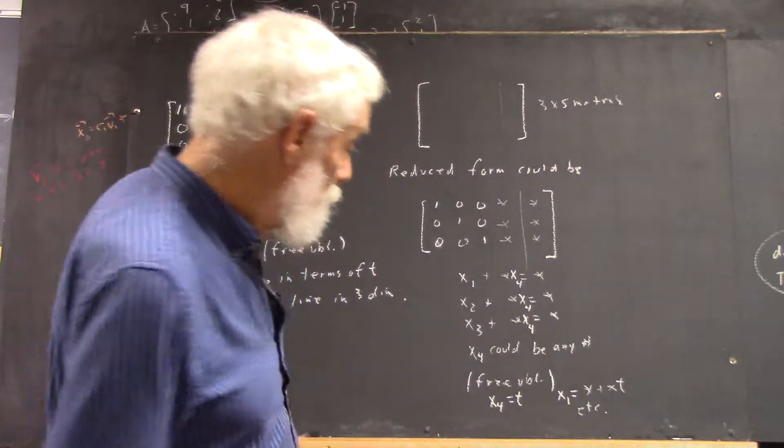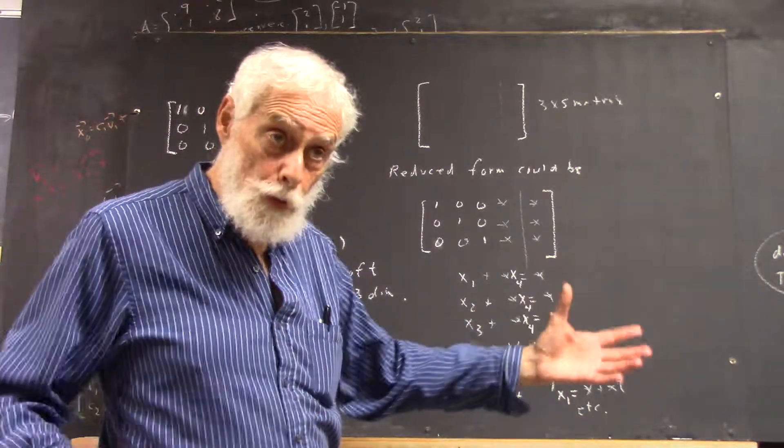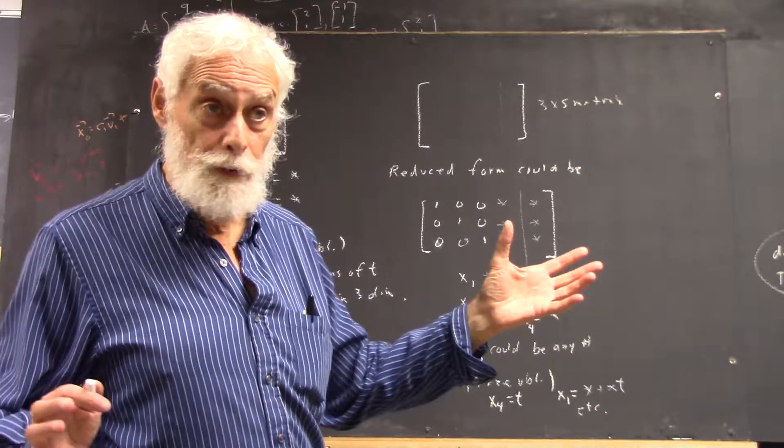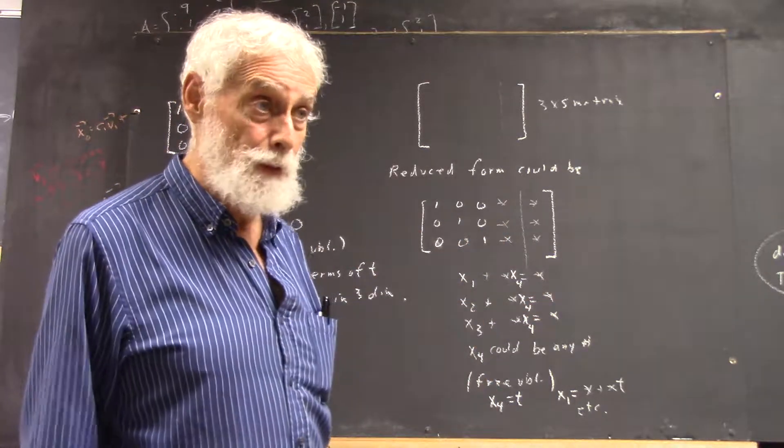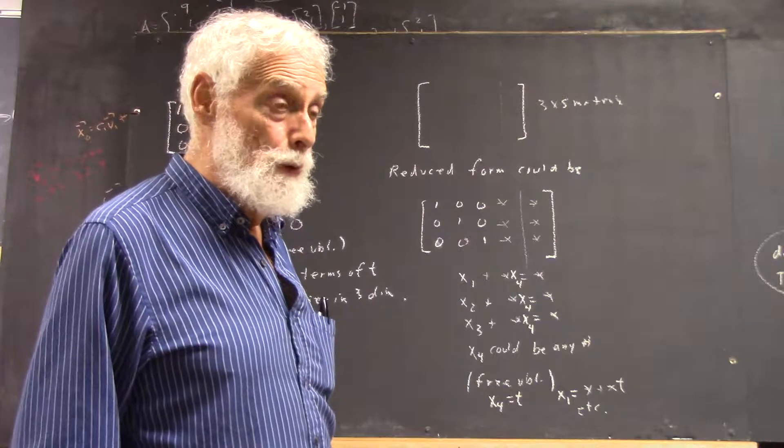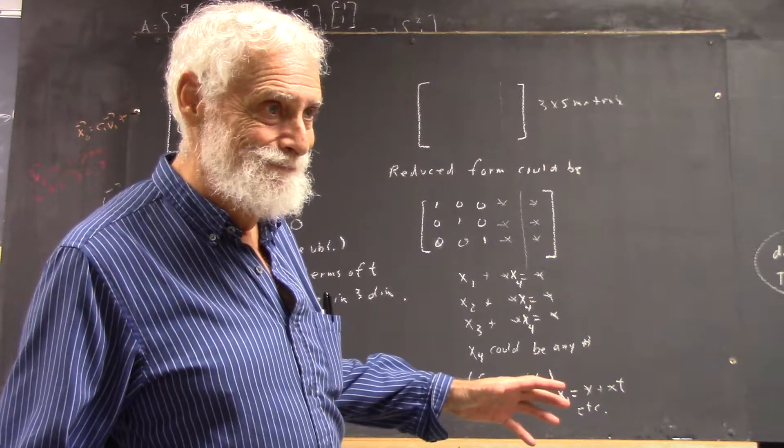And you can't visualize this, because now you've got four variables. That's in four-dimensional space. If you want to visualize it, you really can't. But it's going to be a line in four-dimensional space. Okay. Whatever that looks like.